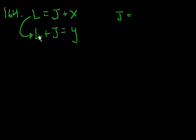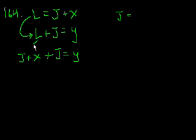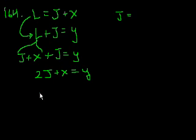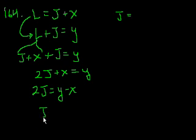Let's take this L and substitute here so we have an equation with just j's, x's, and y's. If L equals j plus x, we can substitute. So we get j plus x plus j equals y. That gives us 2j plus x equals y. Subtract x from both sides: 2j equals y minus x. So j equals (y minus x) over 2. That is choice A.